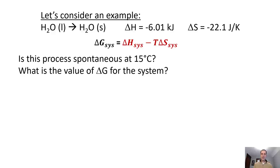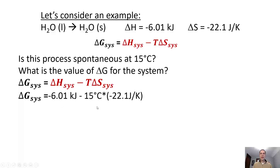If you ended up getting a negative delta G, now might be a good time to stop and see if you can figure out what's going on. So thinking about this: we've got delta G of the system equal to delta H of the system minus temperature times delta S of the system. I always strongly encourage you to write your units out here. We should note that delta H of the system is in kilojoules, and then delta S is going to be in units of joules — so we might recognize that those things don't line up. And hopefully we're also recognizing that Celsius and Kelvin don't line up either.